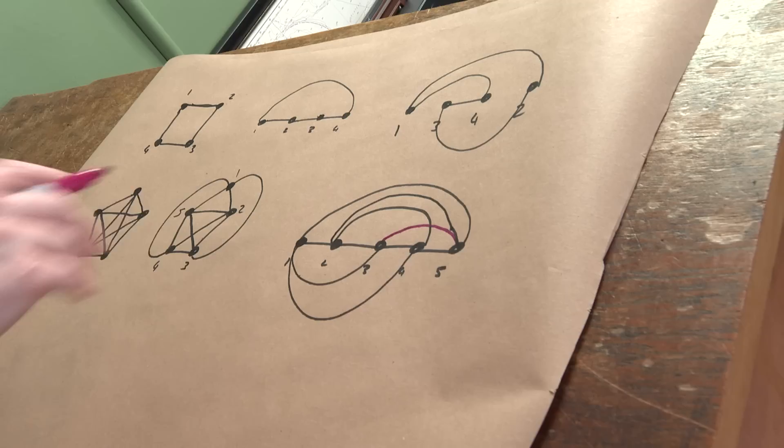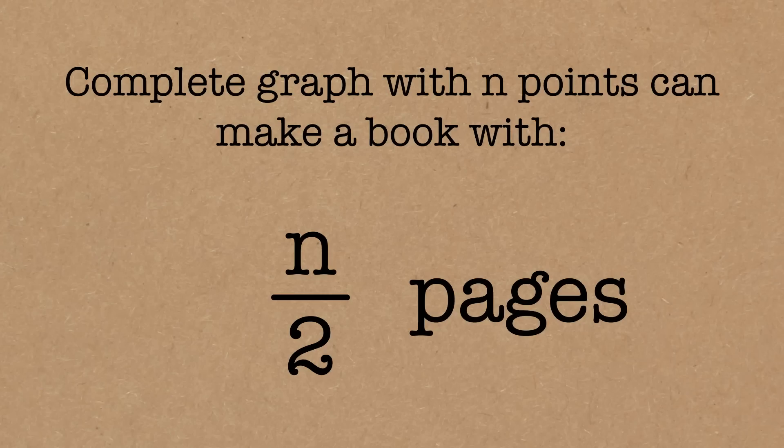If these didn't cross, I would have been able to do that in two pages. In fact, you can make a book of any size. If you've got a complete graph with n points, the book has n divided by two pages, or it's that number rounded up. So if I wanted to make a book with 100 pages, you just do the complete graph with 200 points. So you can make a book of any size you want.